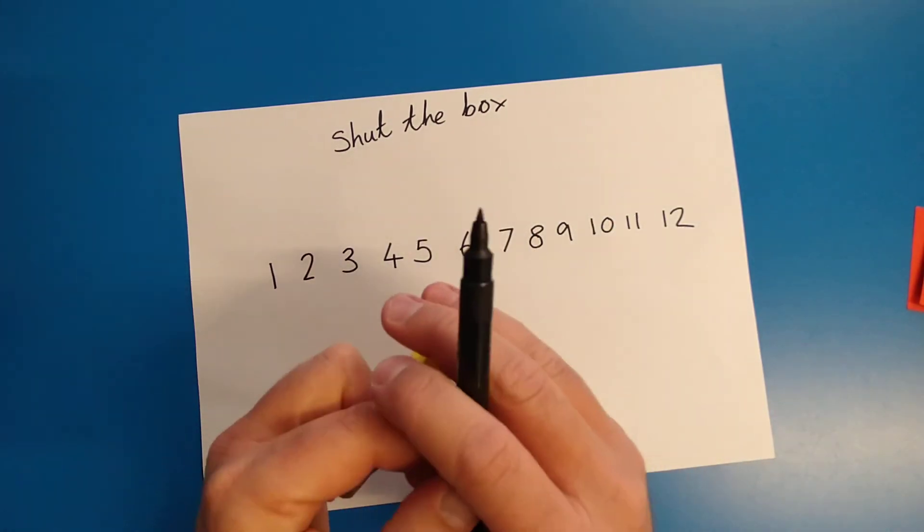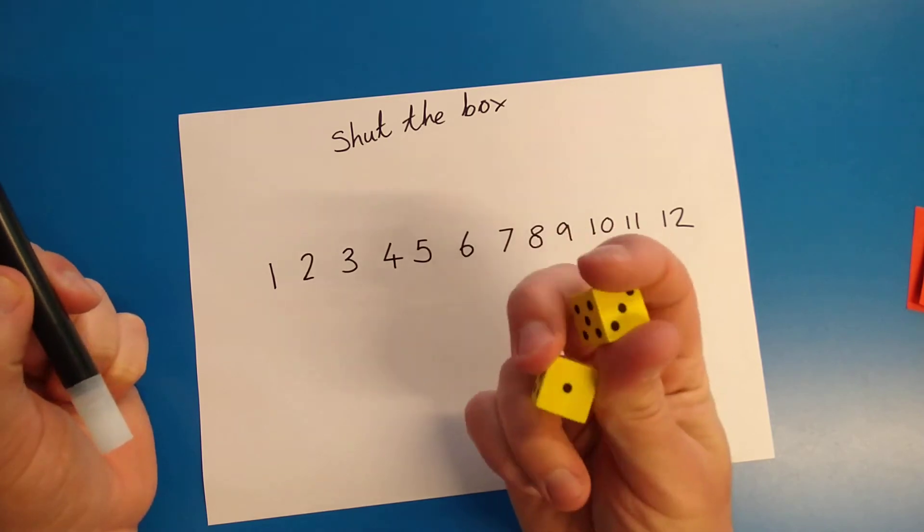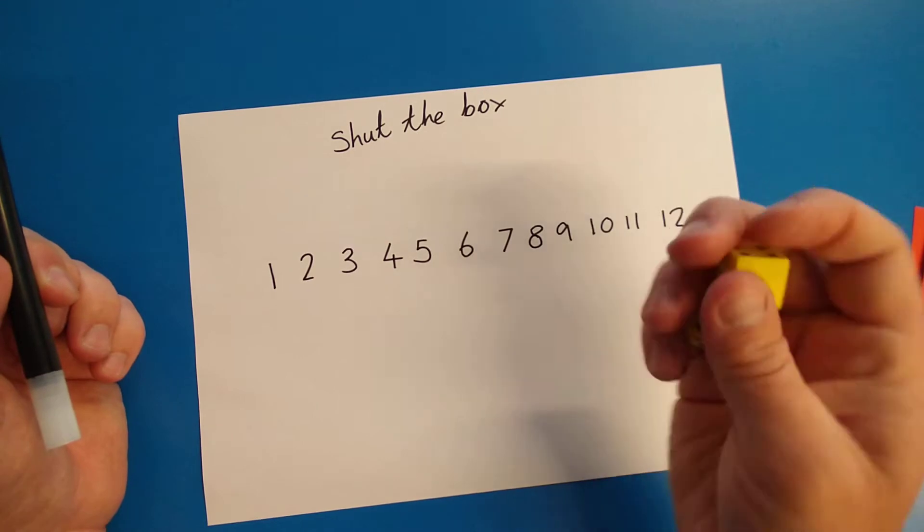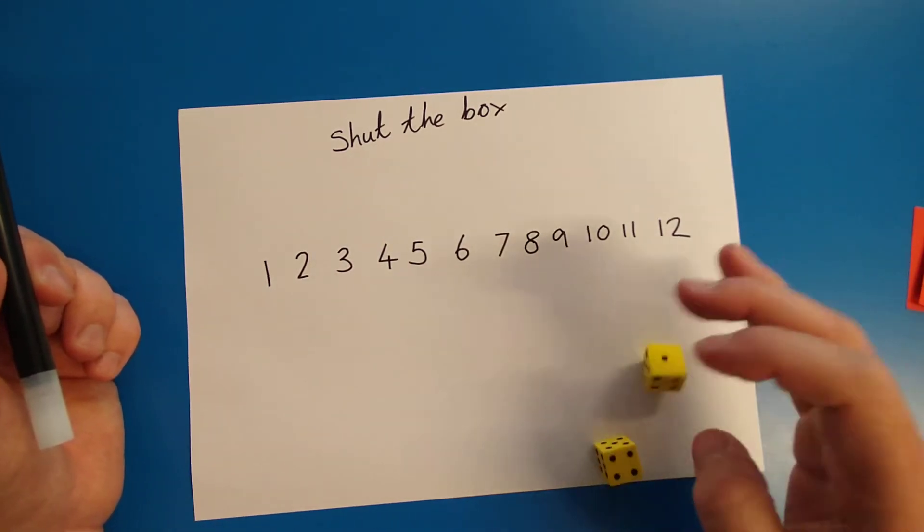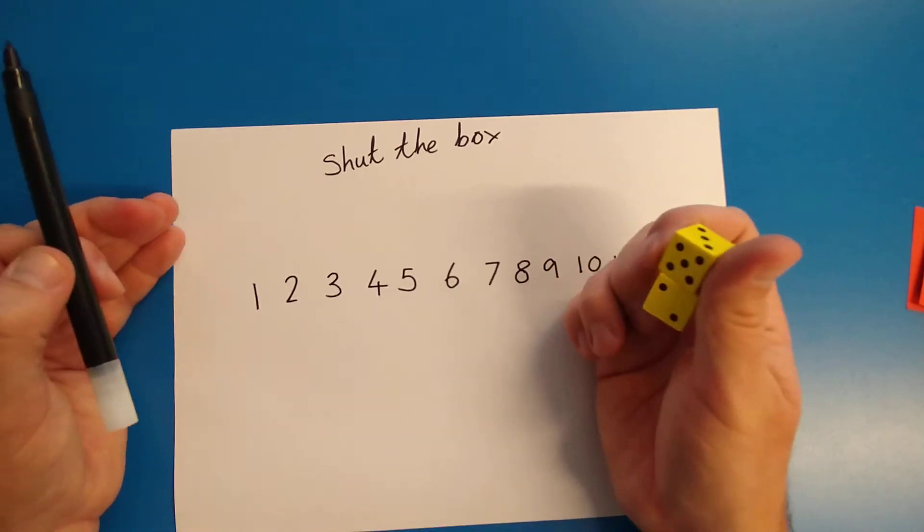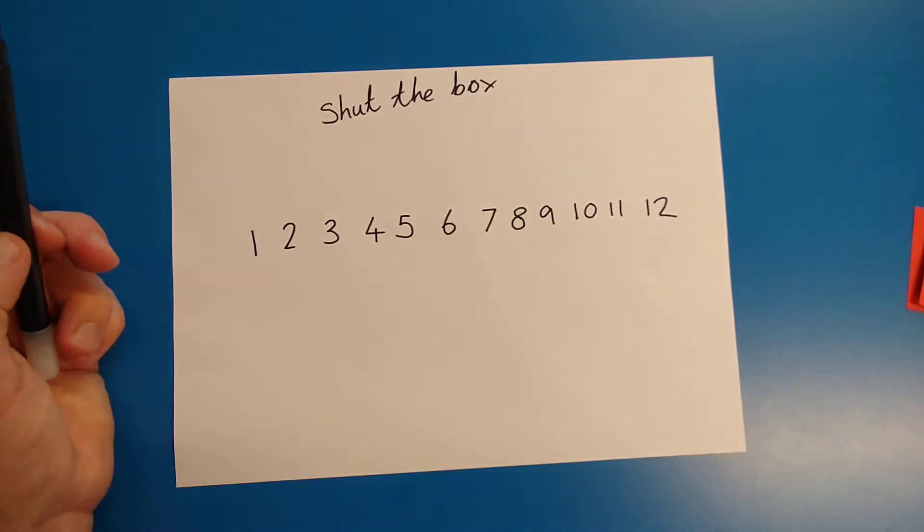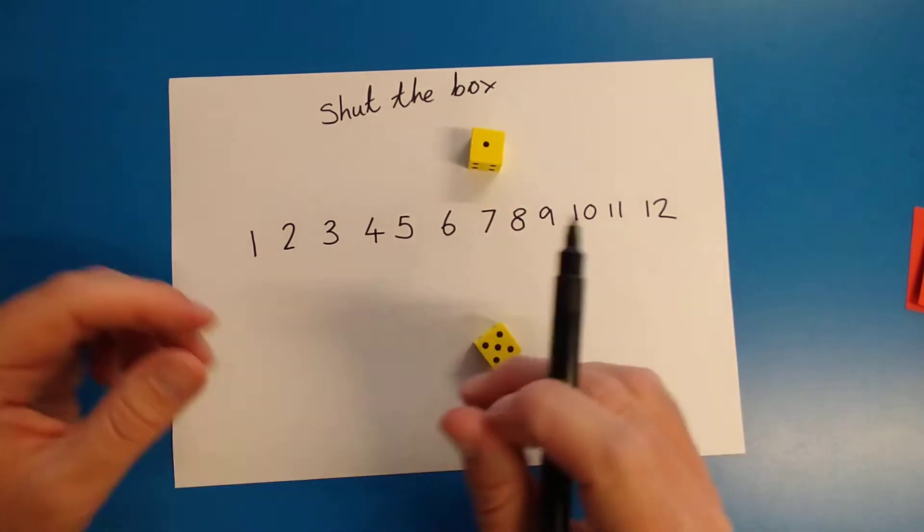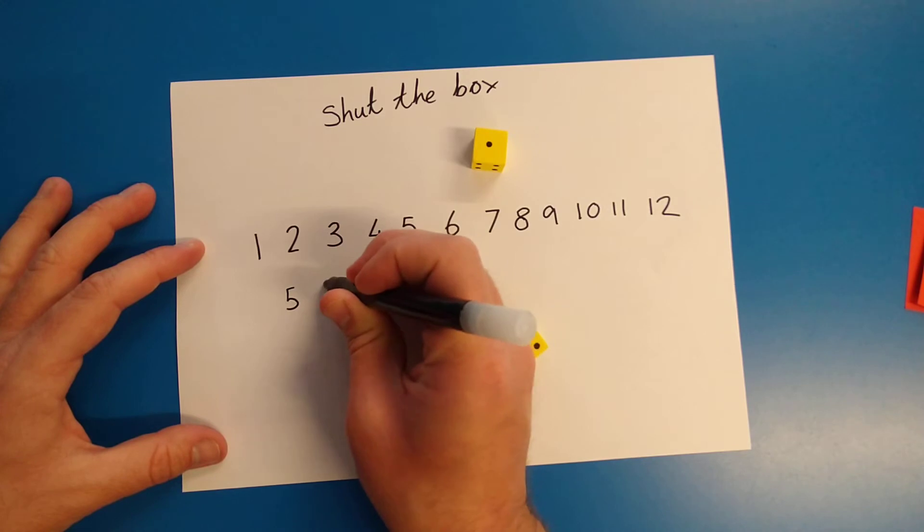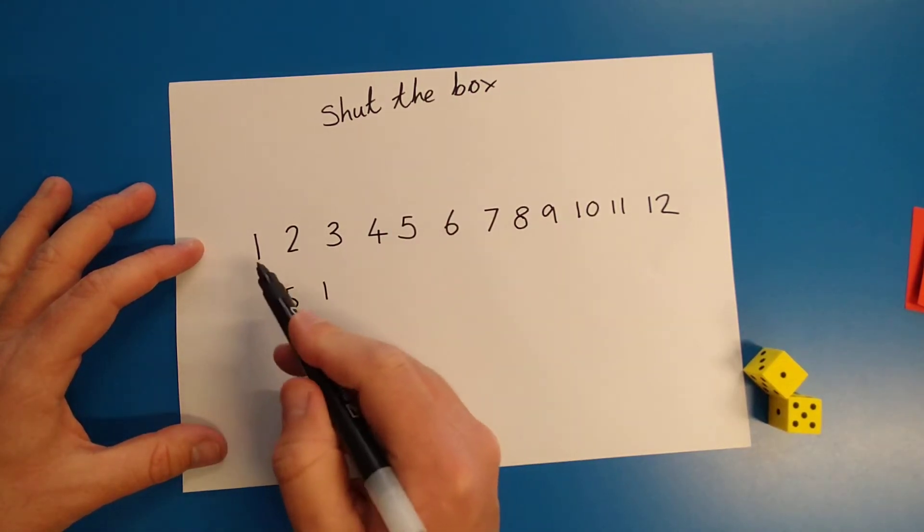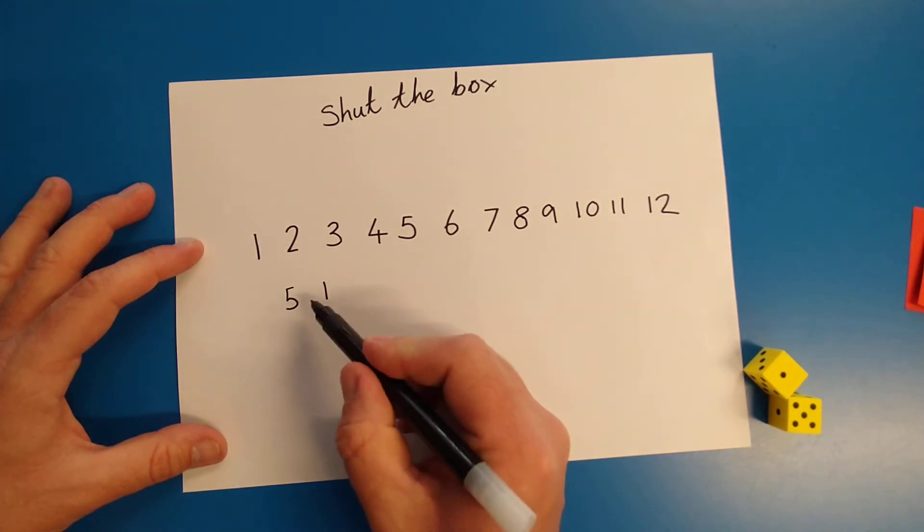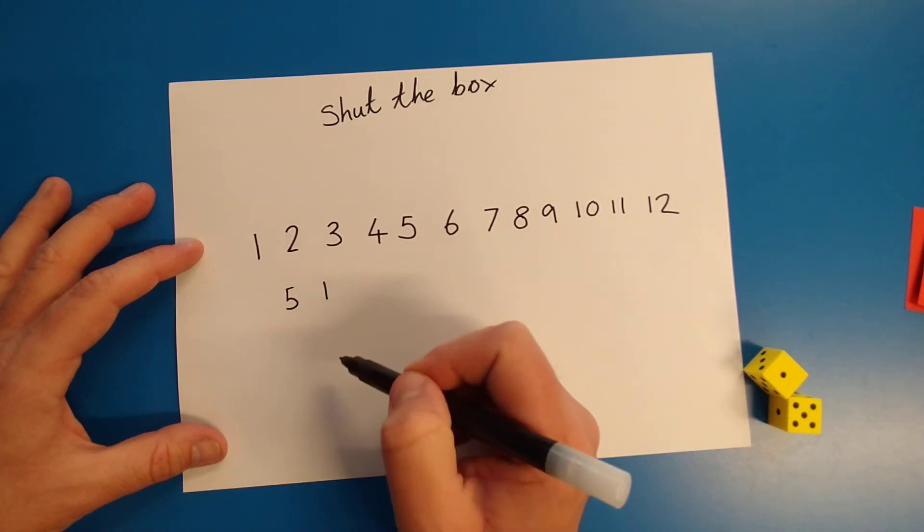What we're going to do, we're going to be practicing our adding and our subtracting with our dice. I have got two quite quiet dice, not like this one. That's a noisy dice. And what I'm going to do, I'm going to roll them, and my numbers are a five and a one. I need to decide what the total of whatever this is, I'm going to cross out. So I can either add these numbers together or take them away.